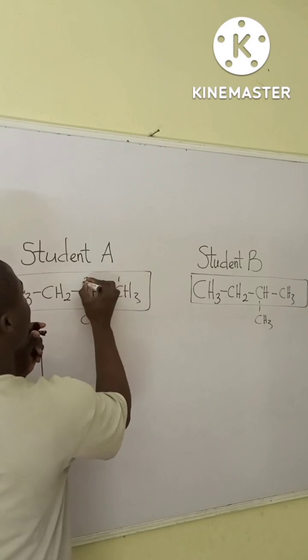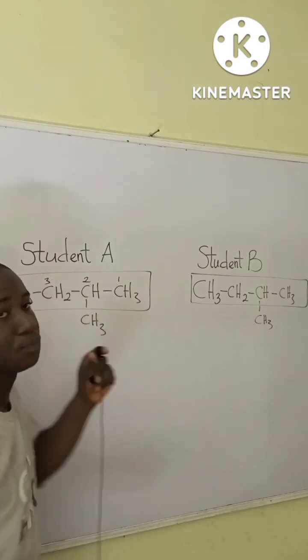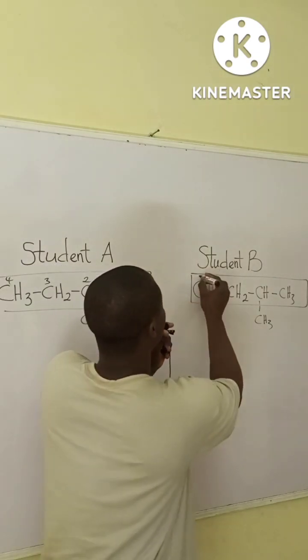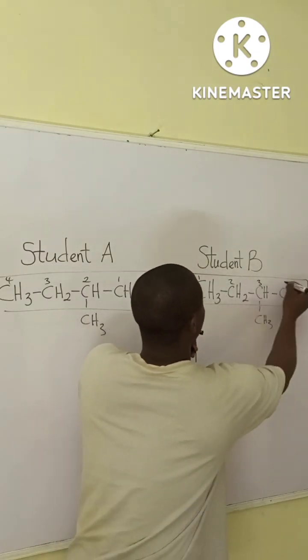Student A made this carbon number one, number two, number three, and number four. Whereby student B made this carbon to be number one, number two, number three, and number four.